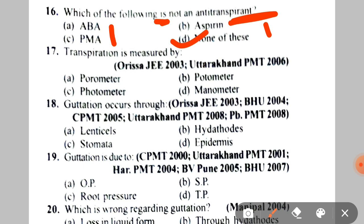Next: transpiration is measured by A. Porometer, B. Photometer, C. Photometer, D. Manometer. The correct answer is B — potometer. This is an important question.